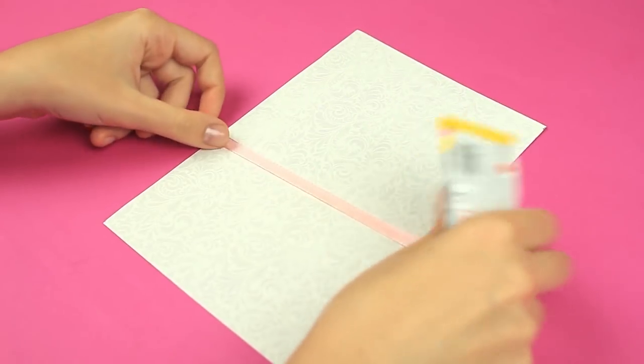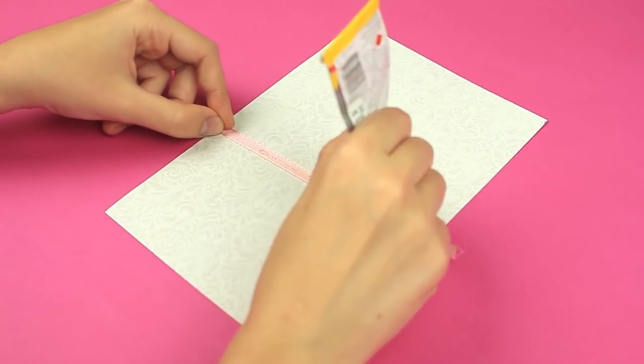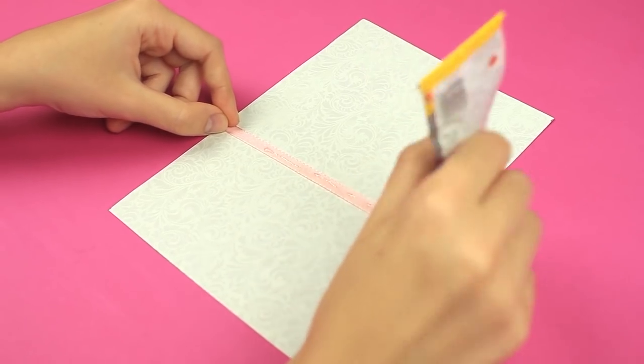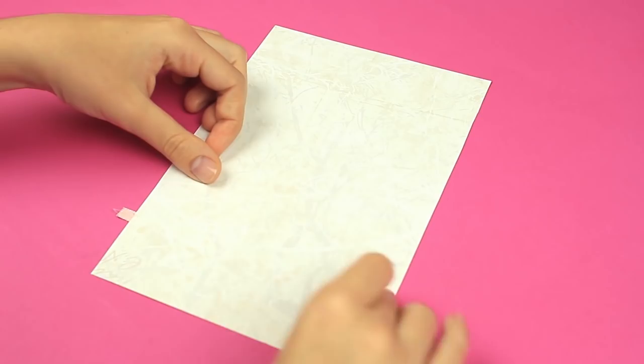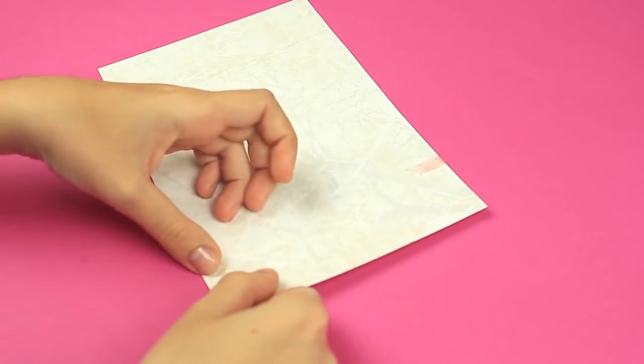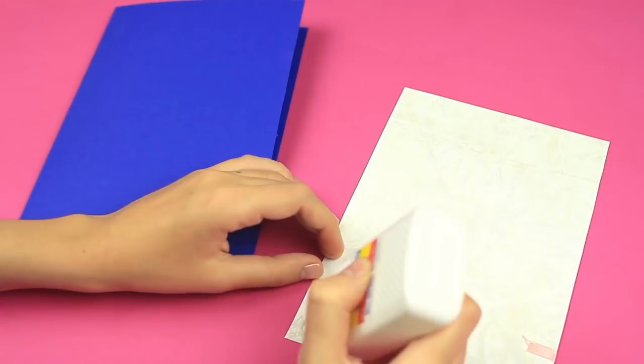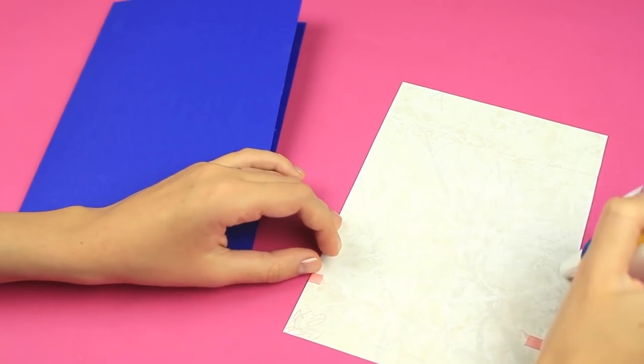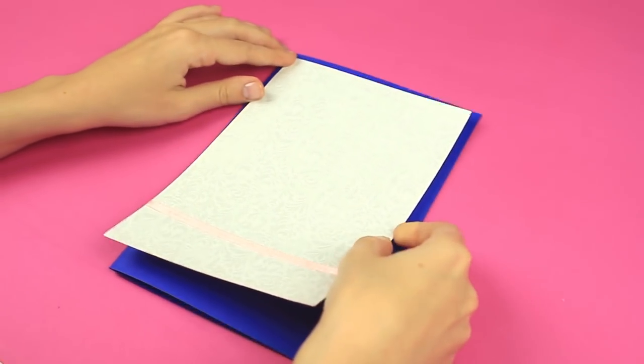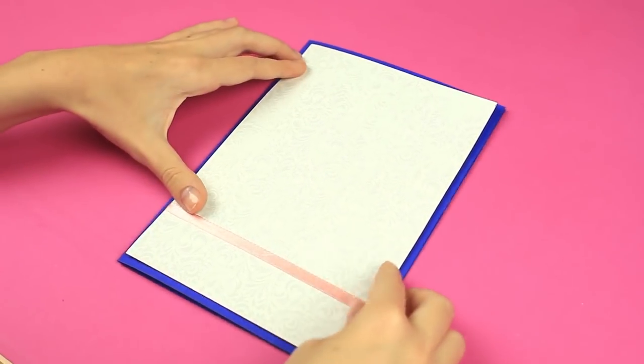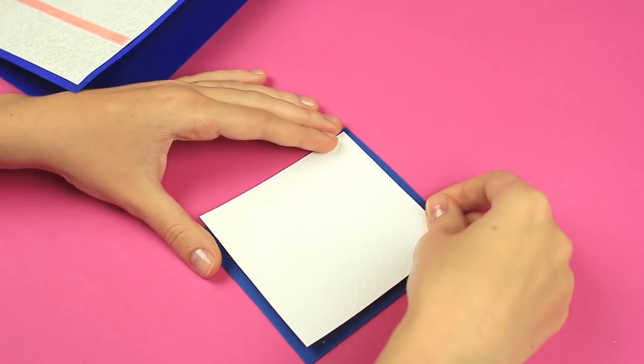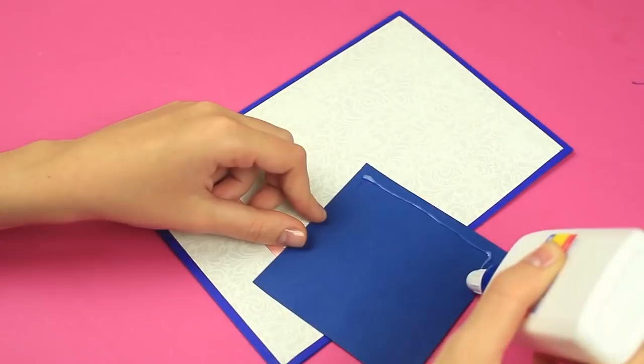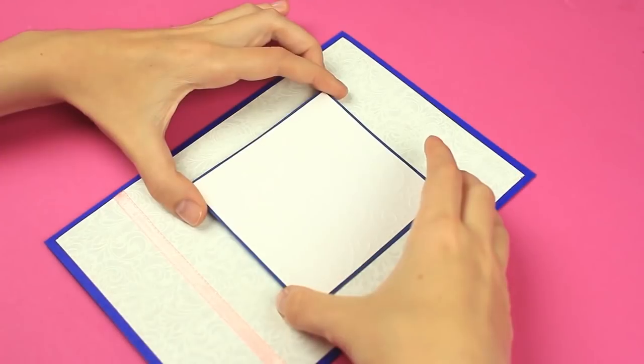Take white embossed card stock for the next card. Attach a pale pink ribbon to the bottom part using multi-purpose glue. Fold the ribbon ends to the back for a neat look. Attach the element as a background to a blue base. Use white glue. Attach white square paper to the blue cardboard a bit bigger in size. Attach the detail to the center of the base.